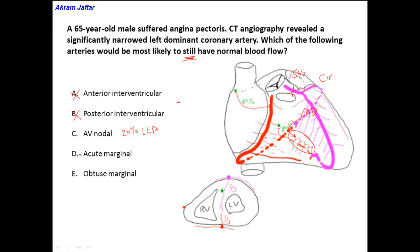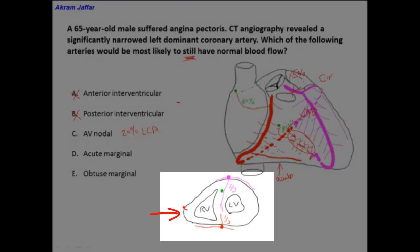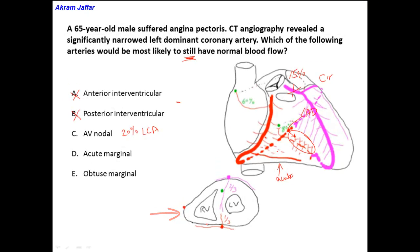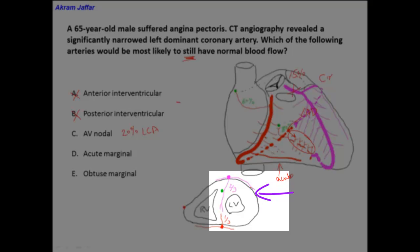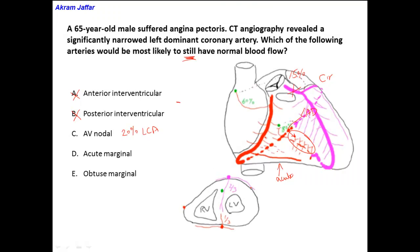Now let's look at option D: the acute marginal artery. This is a branch of the right coronary artery. We have two marginal arteries — the acute marginal artery, located at the acute angle of the heart between the anterior surface and the inferior/diaphragmatic surface, and the obtuse marginal artery, which is a branch of the left coronary artery located at the obtuse margin on the left side of the heart. Since the obtuse marginal artery is a branch of the left coronary artery, it will definitely be affected.